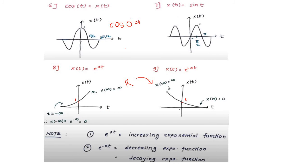Now let us see the plots of the sinusoidal and cosinusoidal signals. For x(t) = sin t: at t=0, sin 0 = 0; at t=π/2, sin(π/2)=1; at t=π, sin π=0. Similarly for x(t) = cos t: cos 0 = 1, cos(π/2) = 0, and plotting various values gives the cosinusoidal signal.